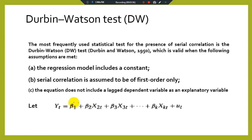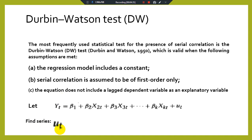This model includes a constant term, assumes first order autocorrelation if present, and does not include a lagged dependent variable such as Y_{T-1} as an explanatory variable. So all three assumptions are fulfilled. With this equation, we can find the series of U_T residuals.